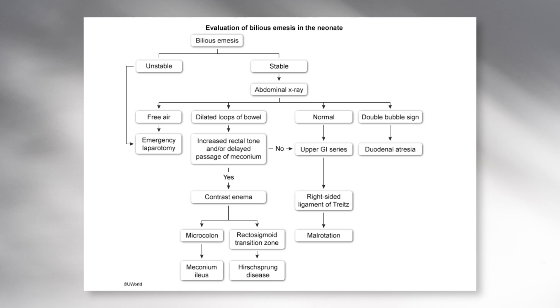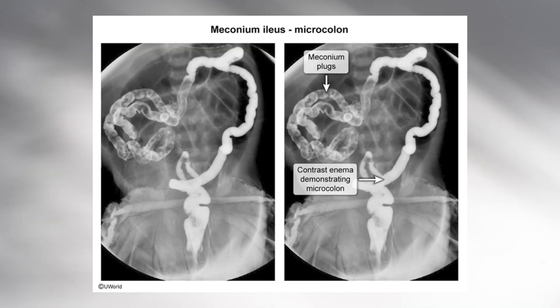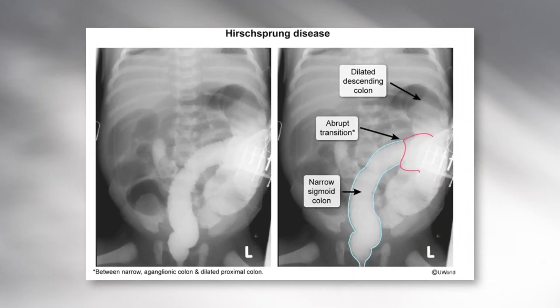If we find a double bubble sign on abdominal x-ray, that is a diagnosis of duodenal atresia. If we find dilated loops of bowel, the next step is a rectal exam. If the rectum has increased tone, we do a contrast enema. A contrast enema will show either a micro colon — a very small, narrow colon seen in meconium ileus — or a rectal-sigmoid transition zone, which is seen in Hirschsprung disease.